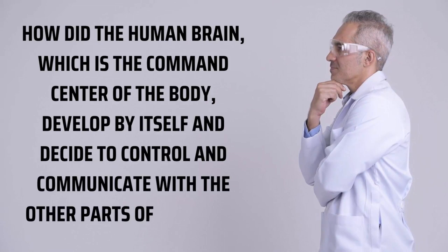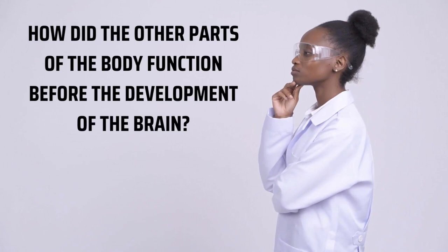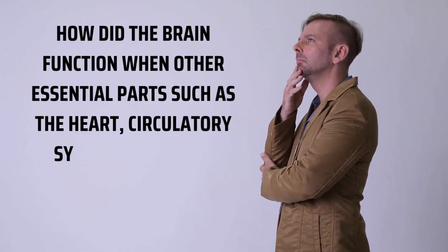Think about this. How did the human brain, which is the command center of the body, develop by itself and decide to control and communicate with the other parts of the body? How did the other parts of the body function before the development of the brain? How did the brain function when other essential parts, such as the heart, circulatory system, and other systems need to be there for the brain to work?